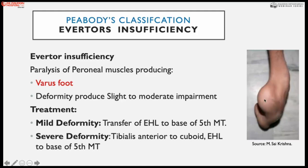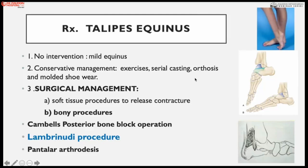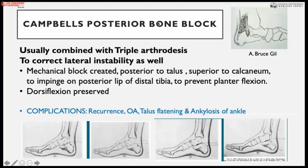Talipes equinus develops because plantar flexors are stronger than dorsiflexors; tight tendo Achillis produces the equinus deformity. With lateral imbalance, equinovarus results; with the opposite imbalance, equinovalgus occurs as a postural deformity. In early and complete talipes equinus, conservative methods are used: serial casting, orthoses, and shoe wear. For severe contractures, soft tissue procedures including cavus release and bony procedures such as the Campbell posterior bone block, the Lambrinudi procedure, or plantar arthrodesis are performed.